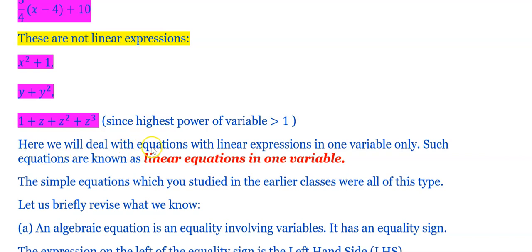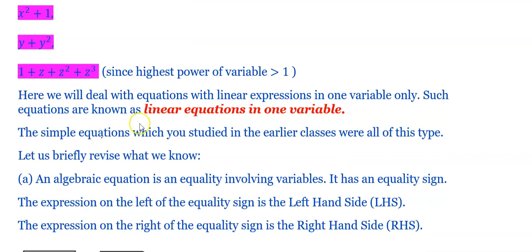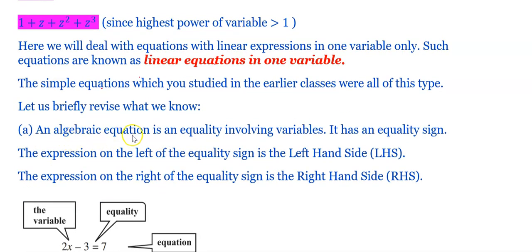Here, we will deal with equations that have linear expressions in one variable only — linear expression with a single variable. Such equations are known as linear equations in one variable. The simple equations you studied in earlier classes were all of this type. Let us briefly revise what we know. An algebraic equation is an equality involving a variable. It must have the equality sign and the variable having index 1.